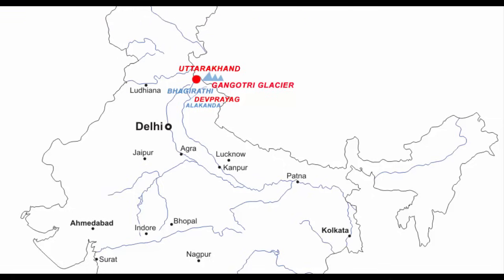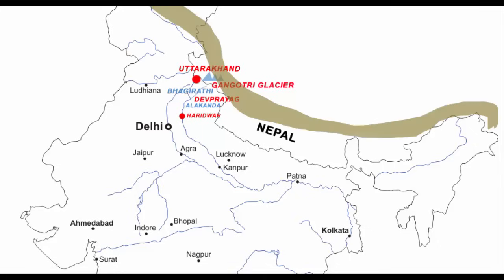Since the Himalaya is a long chain of mountains from west to east, many river channels are formed along its way which join Ganga in its journey. Some of them are the Yamuna, the Ghagra, the Gandhak and the Kosi — they all come down from the Himalayas and join Ganga. Yamuna and Ganga meet at Allahabad, which you must have heard called the Sangam. The other three rivers — the Ghagra, the Gandhak and the Kosi — rise in the Nepal Himalaya.